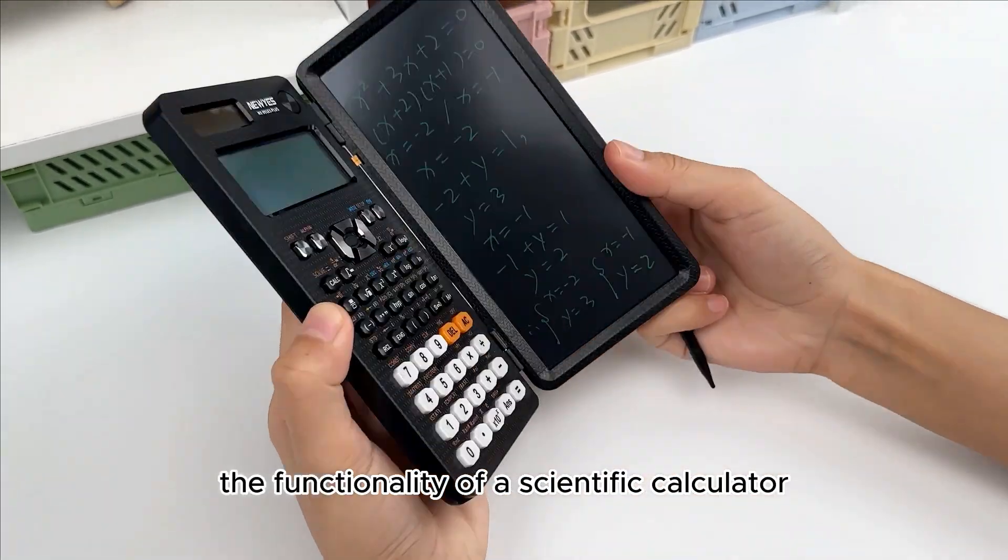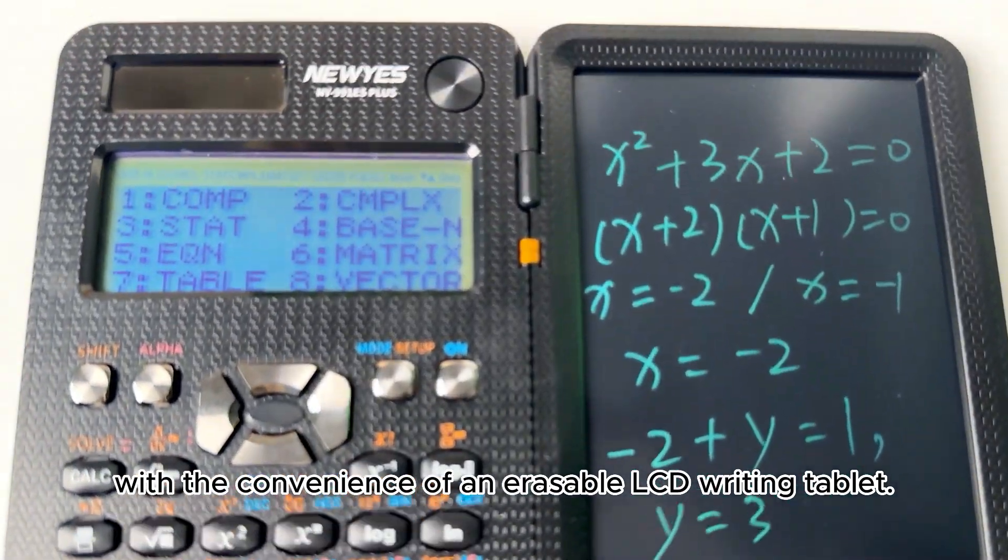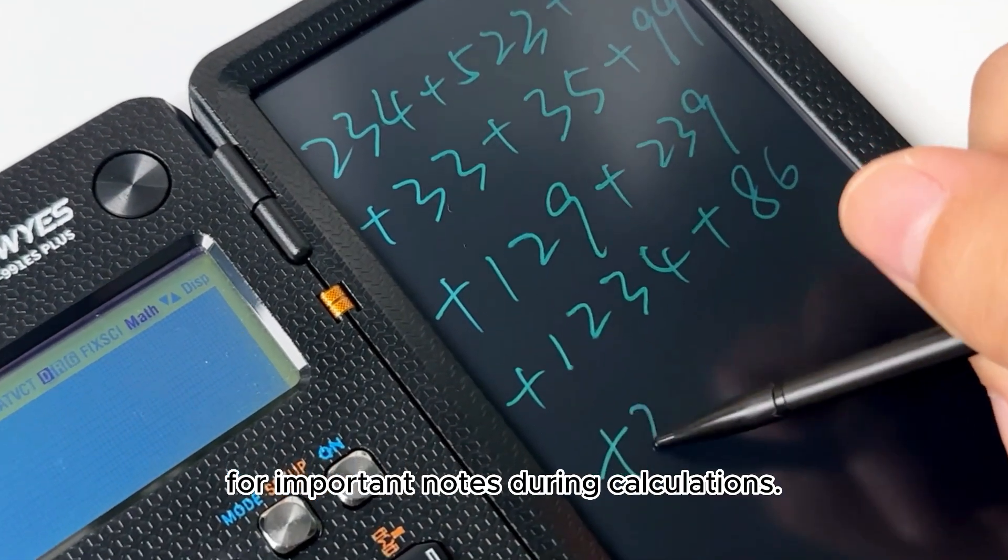The Nui's calculator combines the functionality of a scientific calculator with the convenience of an erasable LCD writing tablet. Equipped with a notepad for important notes during calculations.